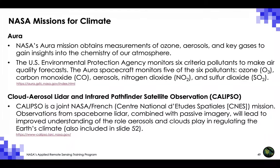NASA's Aura mission obtains measurements of ozone, aerosols, and key gases to gain insights into the chemistry of our atmosphere. Aura flies in formation about 15 minutes behind Aqua in the A-train satellite constellation. Aura's four instruments enable us to investigate questions about ozone trends, air quality changes, and their linkage to climate change, and provide accurate data for predictive models. The United States Environmental Protection Agency monitors six criteria pollutants to make air quality forecasts, and the Aura spacecraft monitors five of the six: ozone, carbon monoxide, aerosols, nitrogen dioxide, and sulfur dioxide.